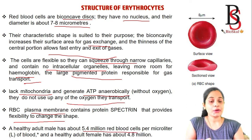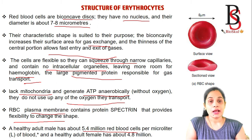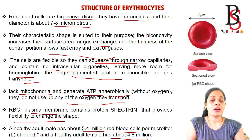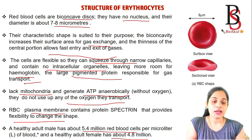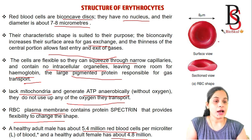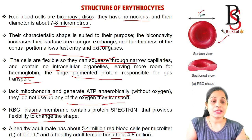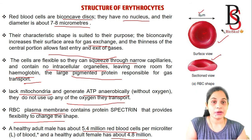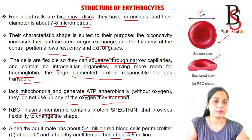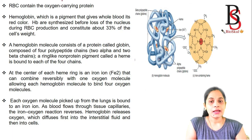A healthy adult male has 5.4 million red blood cells per microliter of blood, and a female has about 4.8 million per microliter. The RBC is biconcave in shape, thinner at the center, with a diameter of 8 micrometers. Its shape is flexible due to the protein spectrin in the plasma membrane.